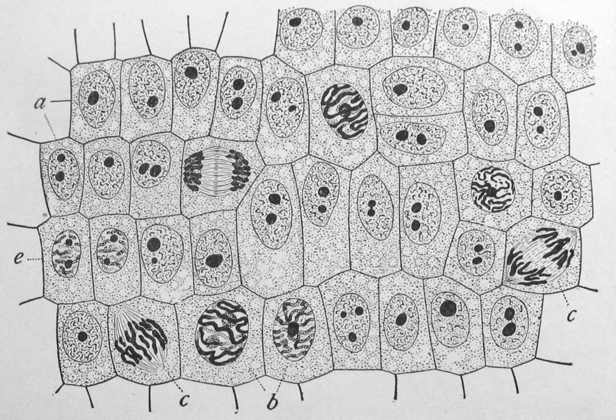Cell theory, first developed in 1839 by Matthias Jakob Schleiden and Theodor Schwann, states that all organisms are composed of one or more cells, that cells are the fundamental unit of structure and function in all living organisms, and that all cells come from preexisting cells. Cells emerged on Earth at least 3.5 billion years ago.